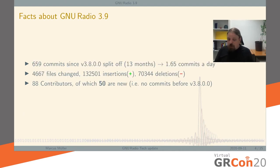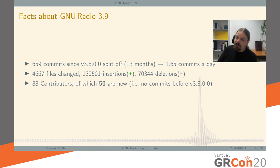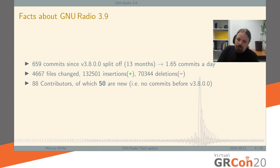What will that release entail? I can tell you the state of the master branch and thus what will be 3.9 as of today. Since we released 3.8, 659 commits have happened. Since that was 30 months ago, that's an average of 1.65 commits per day. That doesn't sound like much until you realize this is mostly a C++ and signal processing project, and a lot of these commits are really large change sets — highly involved technical work. I'm pretty happy about this speed; we're way past our expectations.